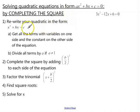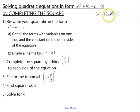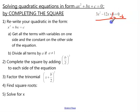The first step is to rewrite the quadratic in the form x squared plus bx equals c. We want to get all the x terms on the left side — these are already there — and we need to move the constant over to the other side. So let's subtract 6 from both sides. Those cancel, and we have 3x squared minus 12x equals negative 6.